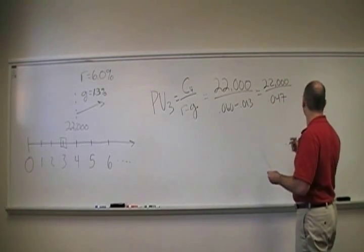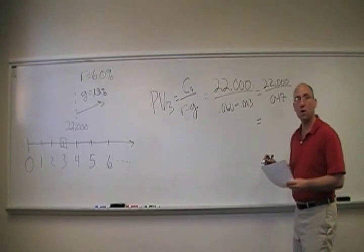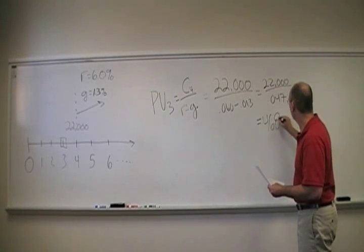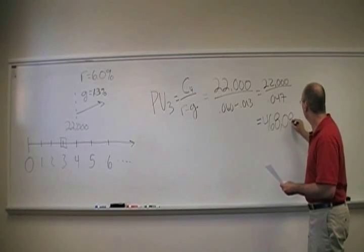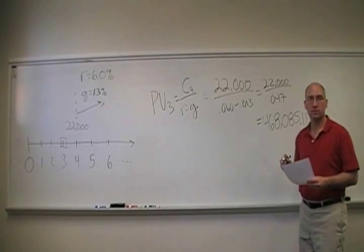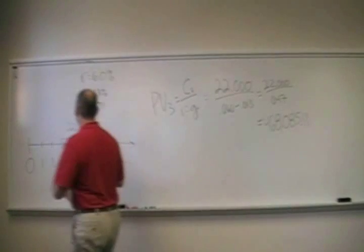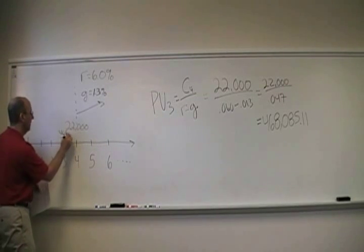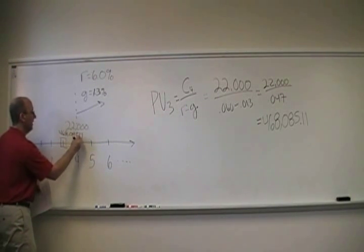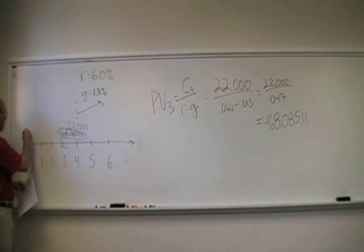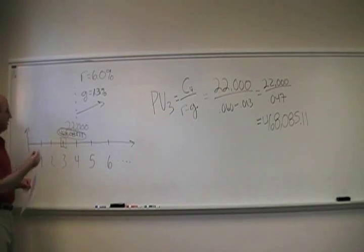So we know that three years from now, as soon as we get off the time machine, the building will be worth $468,085.11. So if we have something that's worth $468,085.11 right here, how much is it worth here? Well, that's easy. We just discount it back by one, two, three periods.